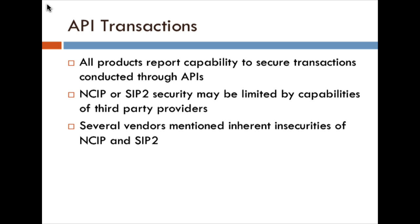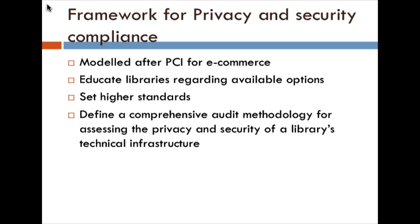Data comes in and out through systems on the back end through application programming interfaces and library protocols like NCIP and SIP, which are sometimes secured and sometimes not. We have to look at the leakage that can happen on the back end, often still transmitted over a network unsecurely. The question I floated: do we need some kind of compliance framework — formal or informal — in the same way that we wouldn't transmit credit card information without agreed-upon controls in place? What controls do we need as we transmit patron data of any kind, including session data, over the wire?